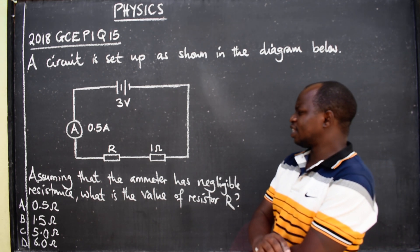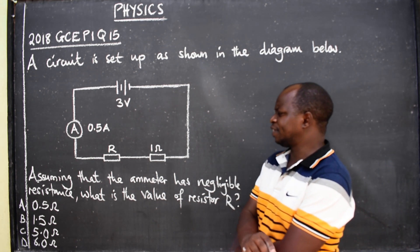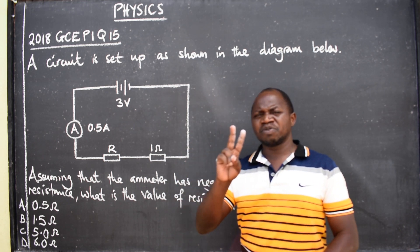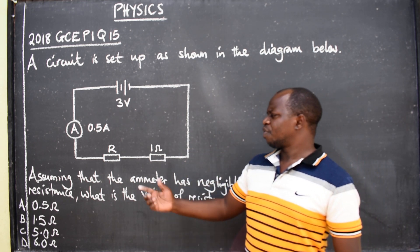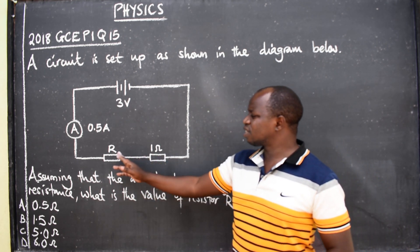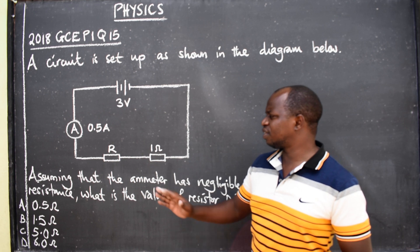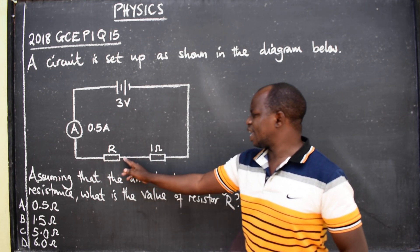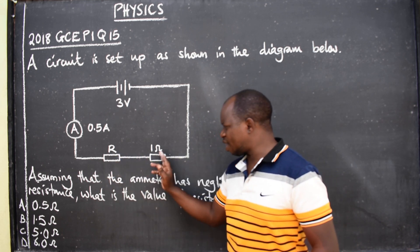Well, the first thing that you need to know here is you look at the connection. Remember we have got two types of connection: we have the series connection and the parallel connection. So this connection that we have here is series connection because the two resistors are in the same line, same wire.